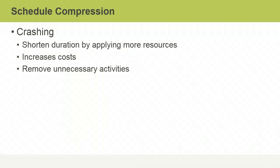Schedule compression involves reducing a project's duration without changing its scope. Two ways to do this are crashing and fast tracking. Crashing involves shortening the duration of activities, usually by assigning more resources to those activities, and involves making trade-offs between costs and the schedule. Crashing can also involve identifying which activities are truly critical and removing activities that are important but not critical, which may require re-sequencing remaining activities and changing the project's critical path.